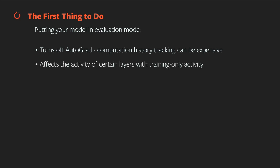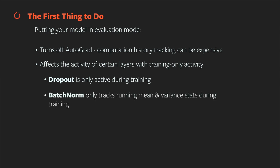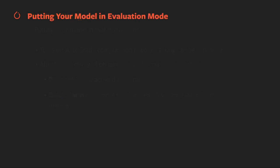Eval mode also changes the behavior of certain modules that contain training-specific functionality. In particular, dropout layers are only active during training time — setting your model in eval mode makes dropout a no-op. Batch norm layers track running stats on their computed mean and variance during training, but this behavior is turned off for eval mode.